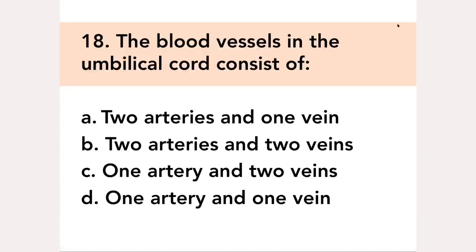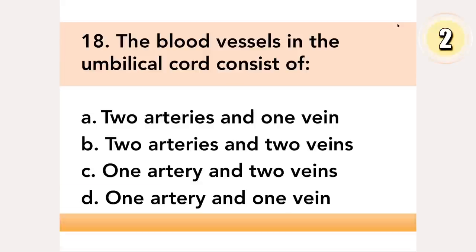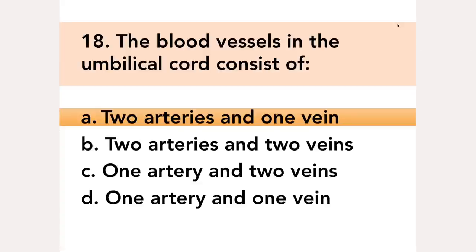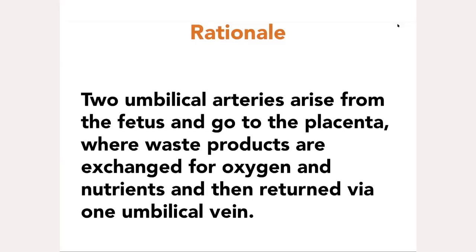The blood vessels in the umbilical cord consist of: A. Two arteries and one vein, B. Two arteries and two veins, C. One artery and two veins, D. One artery and one vein. Answer: A. Two arteries and one vein. Two umbilical arteries arise from the fetus and go to the placenta, where waste products are exchanged for oxygen and nutrients, and then returned via one umbilical vein.